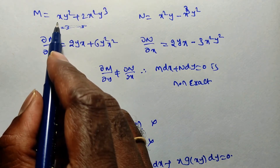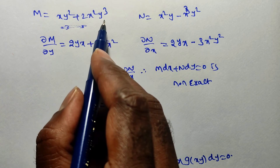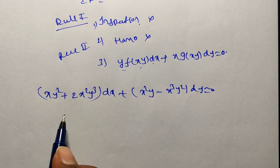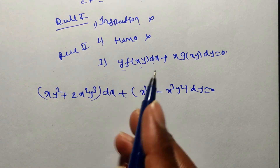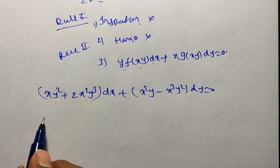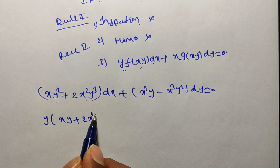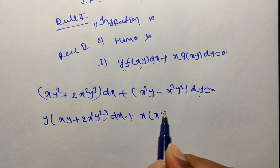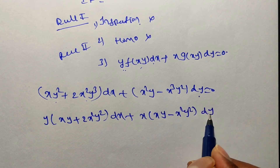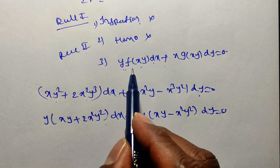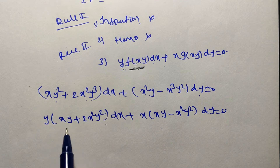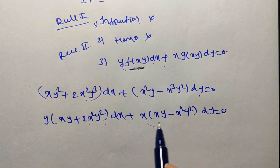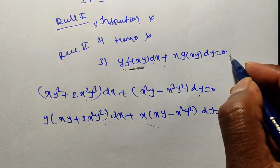Taking y common from M we get y(xy + 2x²y²)dx. For N = x²y − x³y², taking x common gives x(xy − x²y²)dy. Observe: the dx part has y·f(xy) where f(xy) = xy + 2x²y² = xy(1 + 2xy); the dy part has x·g(xy) where g(xy) = xy − x²y² = xy(1 − xy). Both are functions of xy, so the third condition is satisfied.